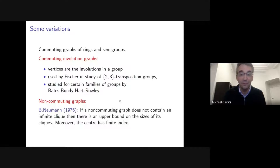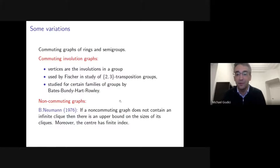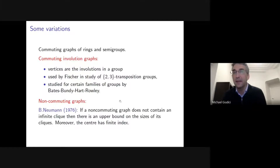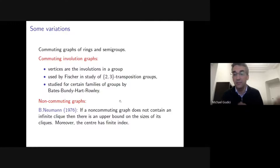I should also mention non-commuting graphs — the complement of the commuting graph, where vertices are adjacent if they do not commute. There's a classic result of Bernhard Neumann, answering a question of Paul Erdős: if the non-commuting graph contains no infinite clique, then there is an absolute upper bound on the sizes of all its cliques. Moreover, in such groups the center has finite index. So some people study commuting graphs, others non-commuting graphs.